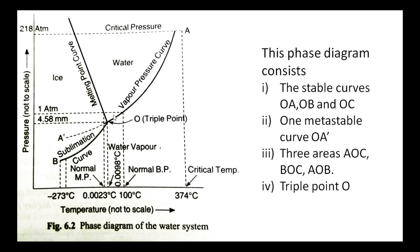The water system exists in a phase diagram. We can see the temperature and pressure graph, showing how many curves exist. The phase diagram consists of the stable curves Oa, Ob, and Oc, and one metastable curve Oa'. Three areas exist between these curves.